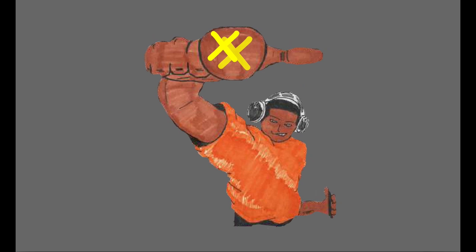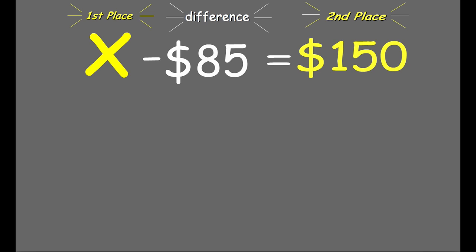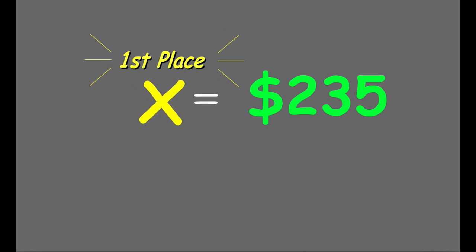His friend told him not to worry, just know it was a lot. Malik knew how to solve this equation cause 85 was the difference in the prizes they gave him. So Malik added 85 to 150 and got 235 as the first place winning.